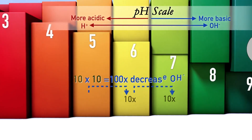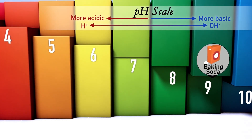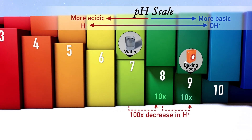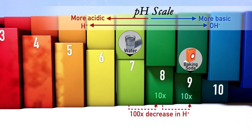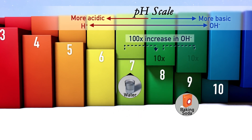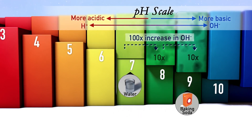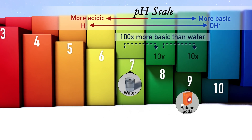Baking soda is an example of a base with a pH of 9. It has a 100-fold decrease in hydrogen ion concentration compared to neutral water. However, it also has a 100-fold increase in hydroxide ion concentration. So baking soda is 100 times more basic or alkaline than water.